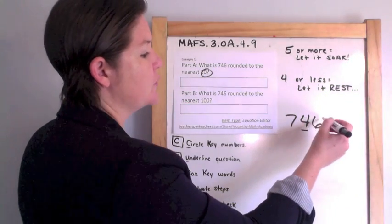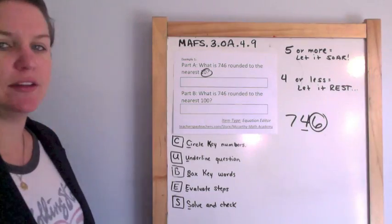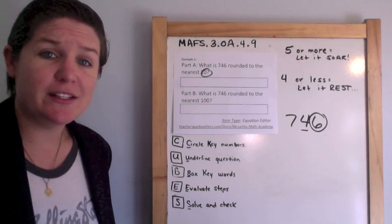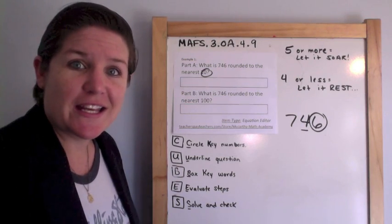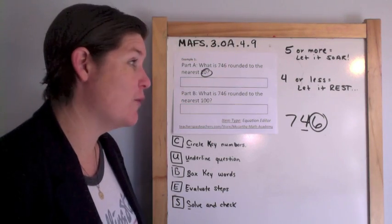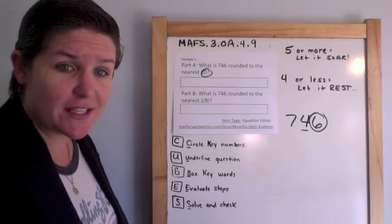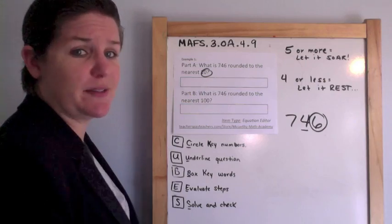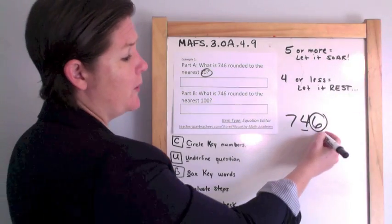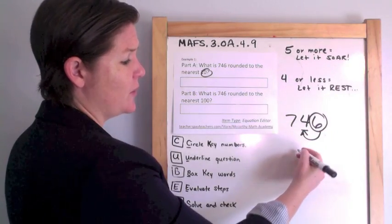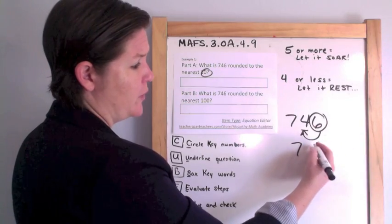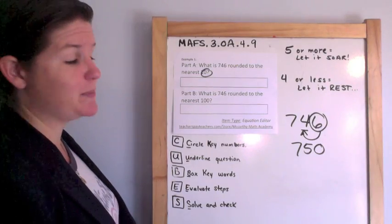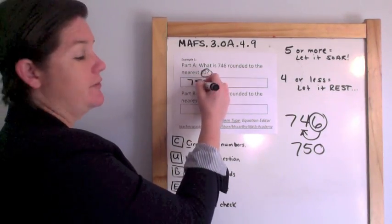Then you look next door. And it's a six. If it's five or more, let it soar. And if it's four or less, you better let it rest. So here we have a six. That goes with the five or more, let it soar. So the four becomes a five. Everything behind that rounding place becomes a zero. So, seven hundred fifty.